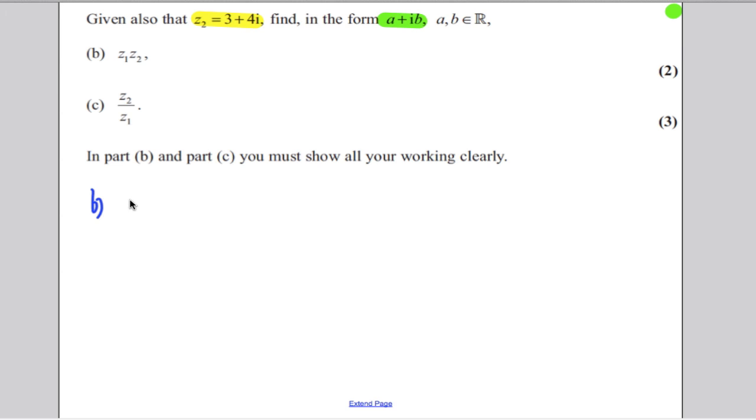So z1, we said, was 1 subtract i, so we're doing z1 multiplied by z2. z1 was 1 subtract i, and z2, we have up here, is 3 plus 4i. All you have to do here is multiply out.